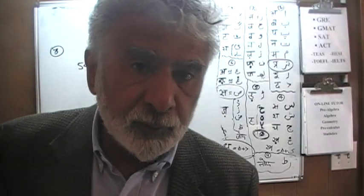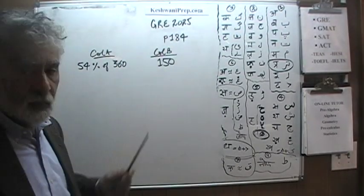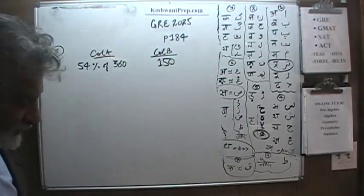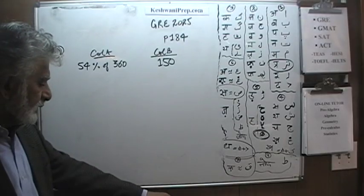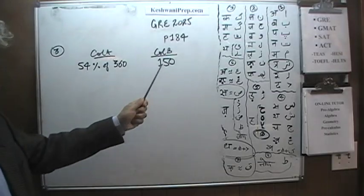Today we will solve two very simple, very straightforward problems that you will find on page number 184. The first problem is already on the blackboard. We are being asked to compare 54% of 360 versus 150.